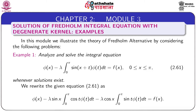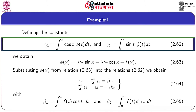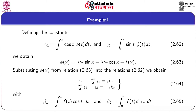We rewrite this equation by expanding sin(x+t) in the form given by this equation. In this form, the integral from 0 to π of cos(t)φ(t)dt is a constant, which we denote by γ1, and similarly γ2. These γ1 and γ2 are unknown constants to be determined, as they contain φ(t) which is the unknown of the integral equation. γ1 and γ2 are given by equation 2.62.